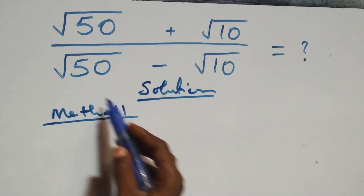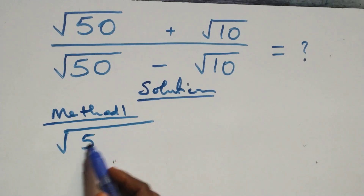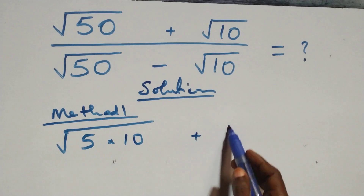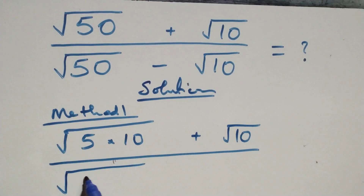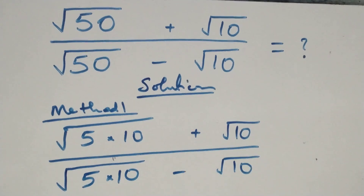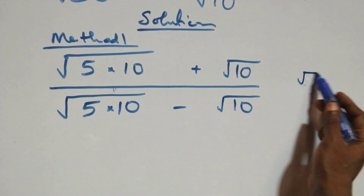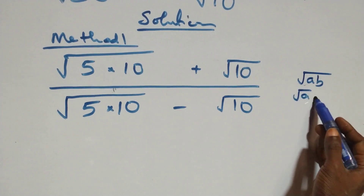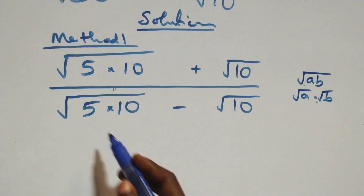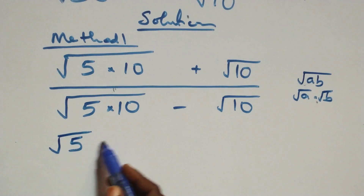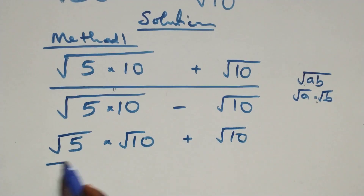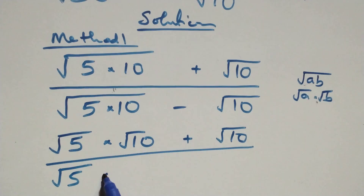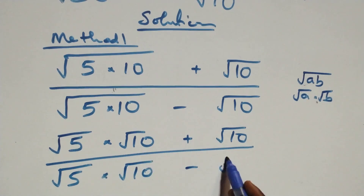In the first method, we rewrite what we have: the numerator becomes √(5×10) + √10, and the denominator becomes √(5×10) − √10. Using the rule √(a×b) = √a × √b, we separate these as √5 × √10 + √10 divided by √5 × √10 − √10.